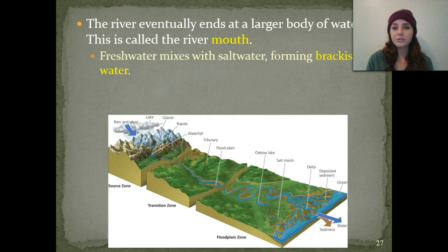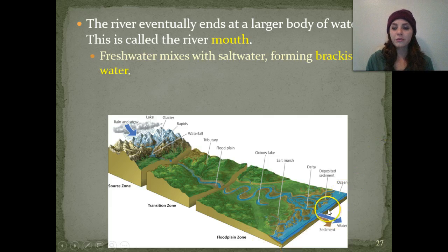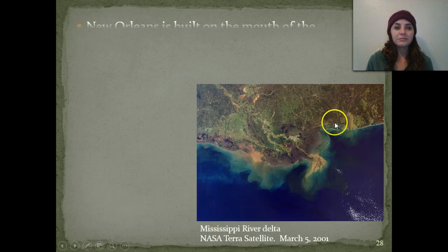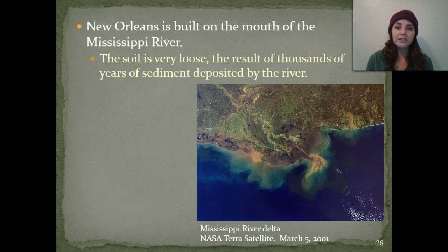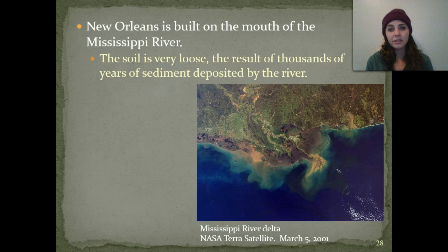The river eventually ends in a larger body of water called the river mouth — just like the mouth of the Mississippi. The fresh water mixes with salt water, forming what we call brackish water. New Orleans is actually built on the mouth of the Mississippi, and the soil there is very loose — the result of thousands of years of sediment being deposited by the river.